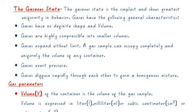The gaseous state is the simplest and shows the greatest uniformity in behavior. Gases do not have definite shape and volume. Gases are highly compressible into smaller volumes and expand without limit. A gas sample can occupy completely and uniformly the volume of any container. Gases exert pressure and diffuse rapidly through each other to form a homogeneous mixture.